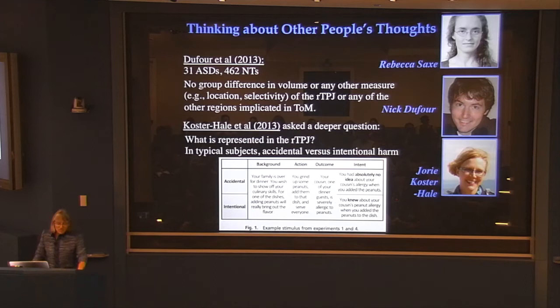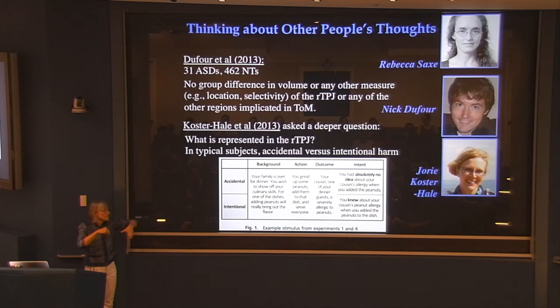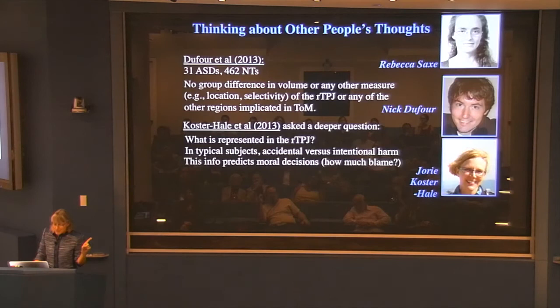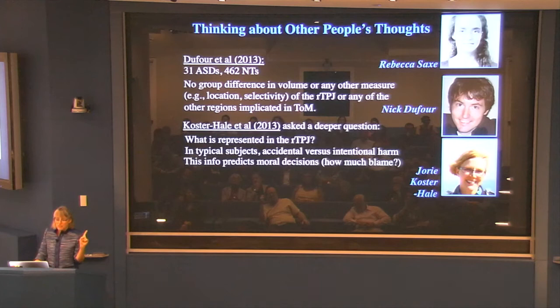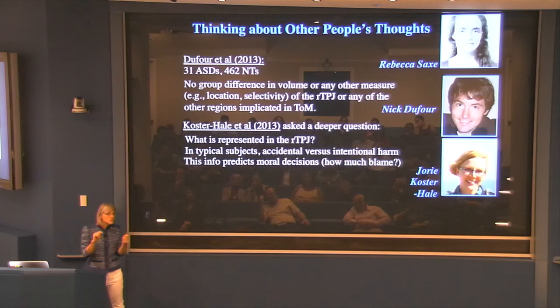In some other studies, Rebecca and her student Leon Young showed that if you zap the TPJ with transcranial magnetic stimulation — messing it up transiently — you reduce people's appreciation of this distinction when making moral decisions. So that region is causally involved in representing this distinction. The pattern is just a set of voxels with a response profile like this for intentional and like that for accidental — you give it to a machine learning system and it performs well above chance. In typical subjects, the amount of that information present in that region also predicts the degree to which individuals respect the distinction between accidental and intentional harm in moral decisions.